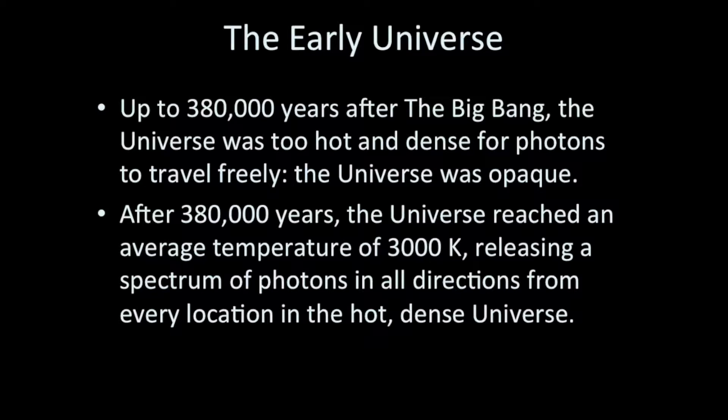But after this time, after 380,000 years, the universe reaches a low enough temperature that electrons connect with nuclei of atoms and that allows for photons of light to travel freely throughout the universe. At this moment in time, the universe, in all locations, releases photons in every direction. And this spectrum of light is what is produced from the hot, dense, early universe.